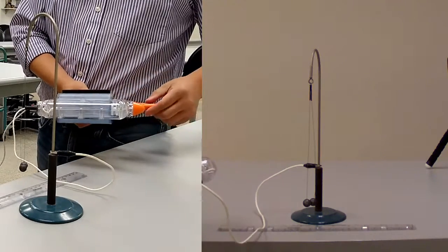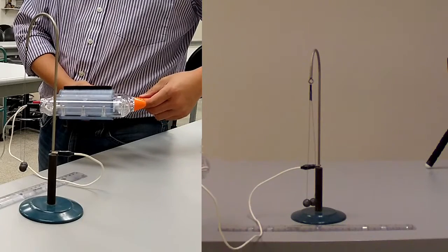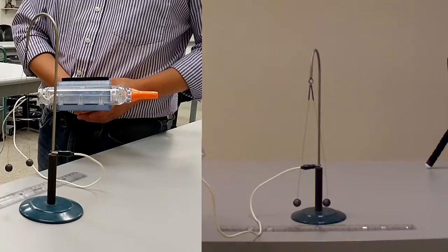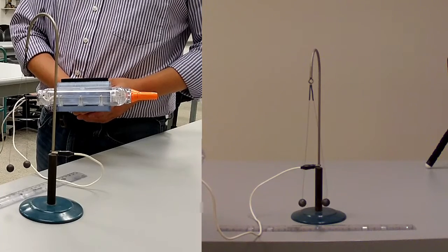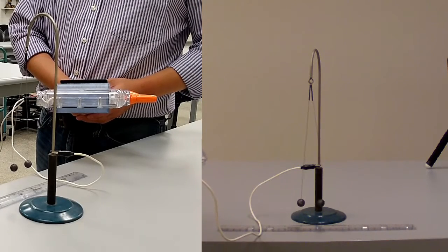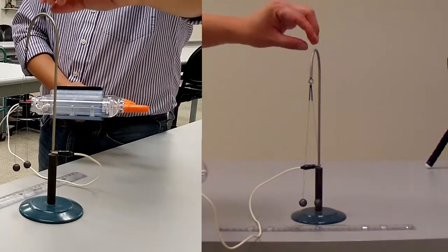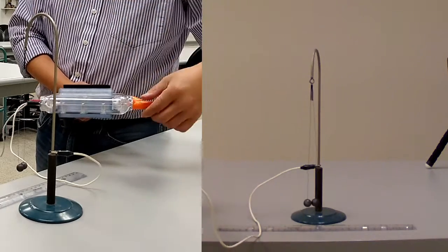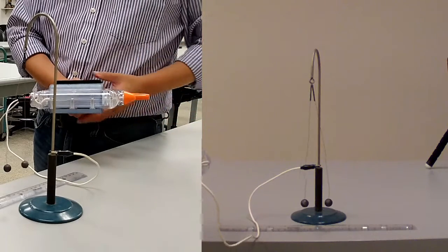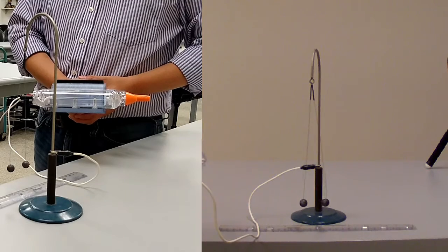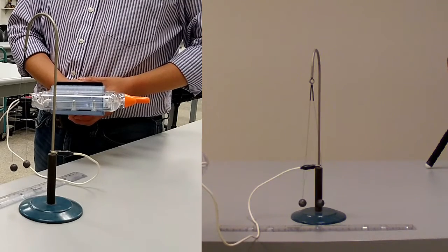The pith balls are charged with a half turn of HVGenecon. You can see the pith balls getting near each other over time. It's because the sharp corners of the setup leak the charge. I'll charge it again with another half turn. The separation illustrates the electrostatic repulsion.